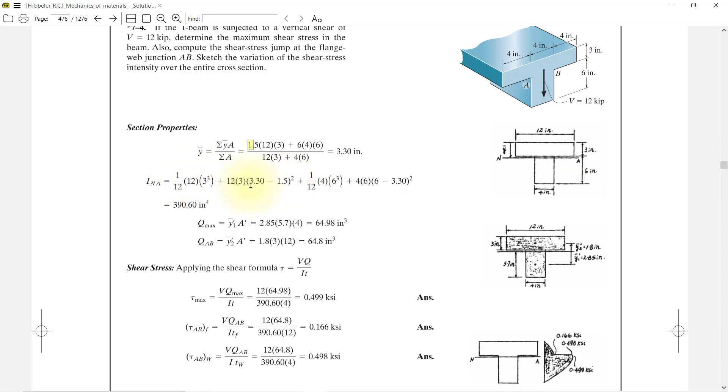Same thing, area times 4 multiply by 6³ divided by 12. Here you can see that 4 multiply by 6³ divided by 12, plus 4 multiply by 6 multiply by (6 minus 3.3)². And we got our I is equal to 390.60 in⁴.